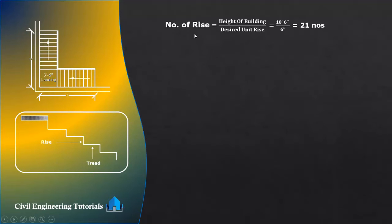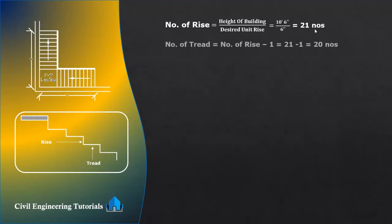Number of risers equals height of building divided by desired unit rise. Height of building is 10 feet 6 inches divided by 6 inches, giving us 21 numbers of risers. Now we need to calculate number of treads. Number of treads equals number of risers minus 1, so 21 minus 1 gives us 20 numbers of treads.